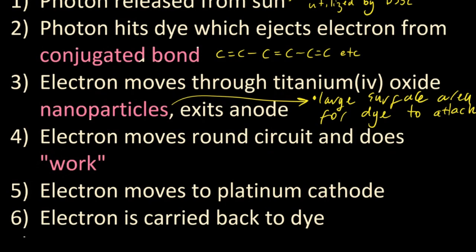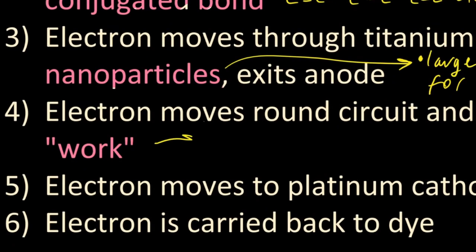The electron moves around the circuit and does work, and so work is another name for some electrical activity such as lighting up a bulb or powering something.